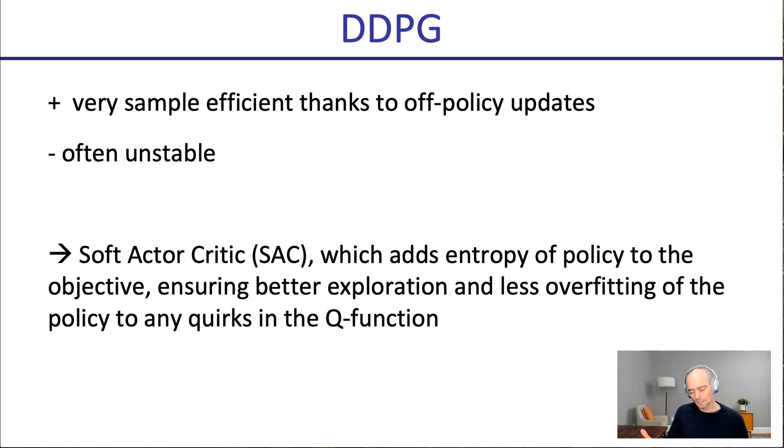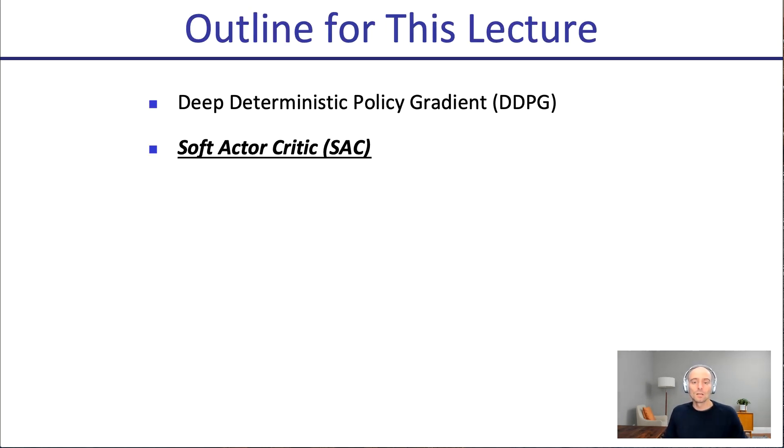And then the entropy, when I say less overfitting on the policy to any quirks of the Q function, because the Q function favors a specific action in DDPG, the policy might heavily favor that action. But maybe the Q function is still noisy, and maybe by having a max ent in the objective, you'll have a more spread out policy that doesn't seek out to peak so highly on that specific action the Q function currently thinks is best.